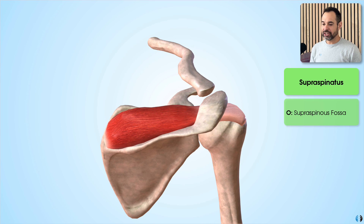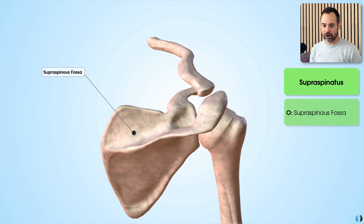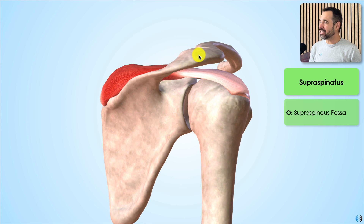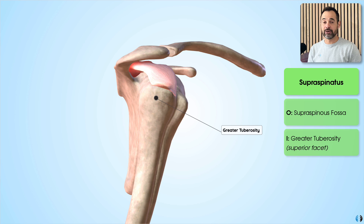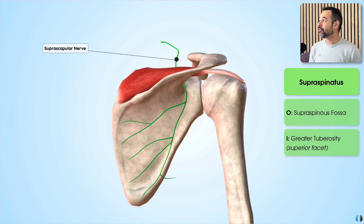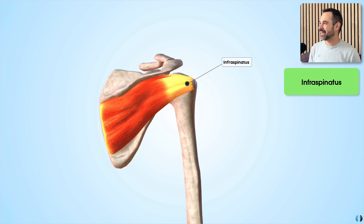The supraspinatus originates at the supraspinous fossa of the scapula — the fossa superior to the spine of the scapula — which is clearly why this muscle is called the supraspinatus. It then runs underneath the acromion before inserting into the superior facet of the greater tuberosity of the humerus. The nerve supply for this muscle comes from the suprascapular nerve.